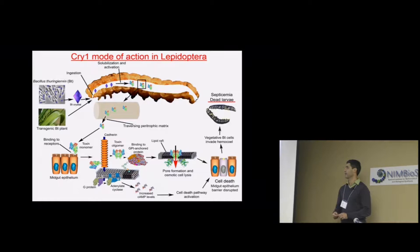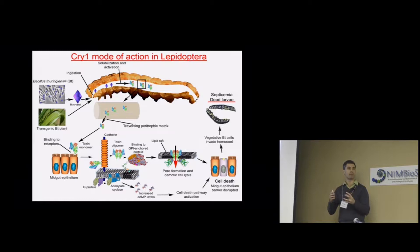So how do these toxins work? This diagram represents the current understanding of the mode of action of Bt toxins. The insect ingests either the bacteria with the crystal, or the toxin directly from the transgenic plant. Once ingested, there is solubilization of the crystal. This happens in the insect midgut because they have very high pH — around pH 9 — which favors solubilization.